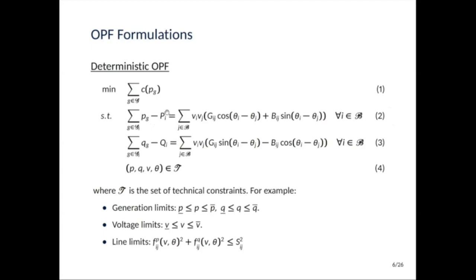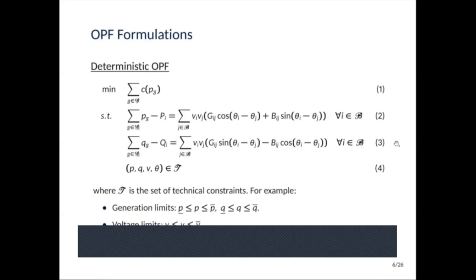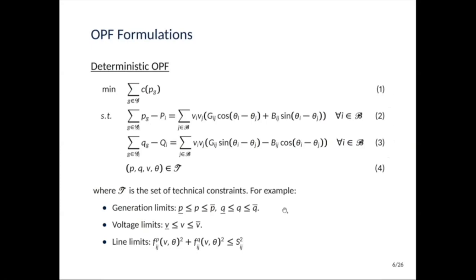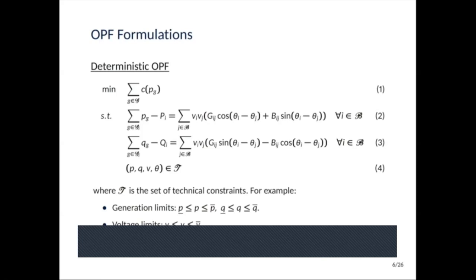The classical formulation of OPF is the following. In equation one, we're trying to minimize the generation costs. In two, we've written the real power balance, where you have the real power generation here and the power demand here. We have more or less the same constraints for the reactive power in three. And four is ensuring that the technical constraints are met. In the set of technical constraints, we have, for example, generation limits on both real and reactive power, voltage limits, but also line limits where the flows are a function of the voltage magnitude and angle.